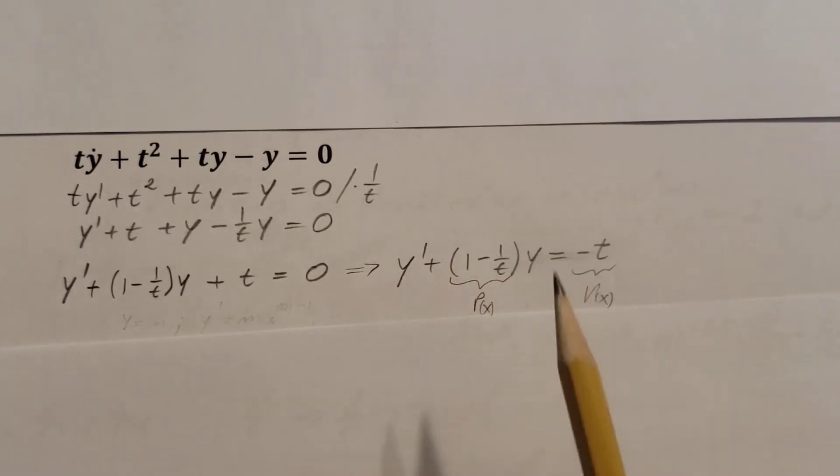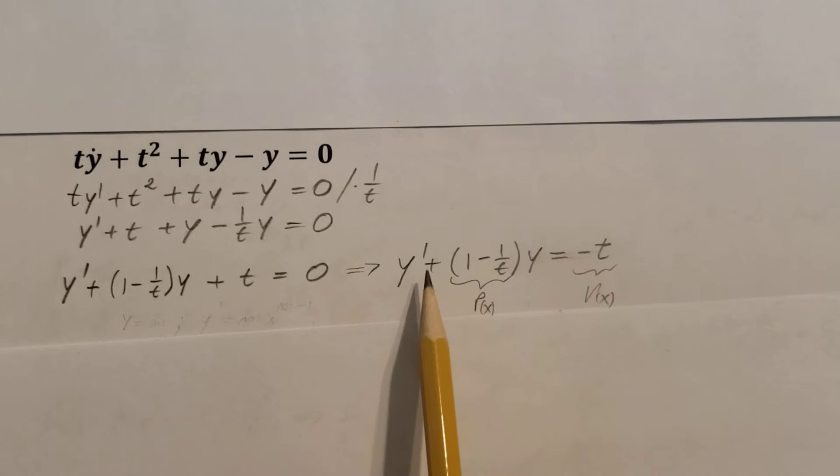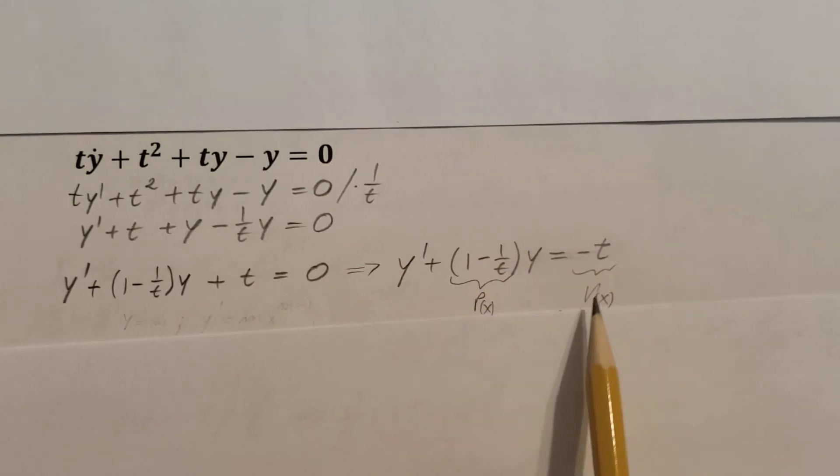Therefore, we're going to arrive to a form that we can see and it's much easier to recognize that it's a nice differential equation. Y prime, we have a y here, and here we only have a simple function. If we take a look at it, we can see that this would be our p(x) and r(x).